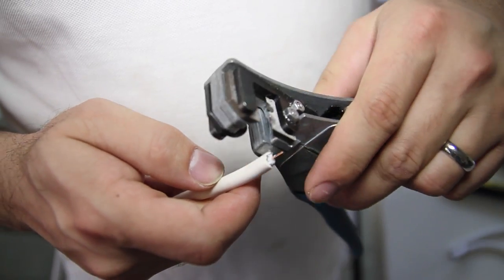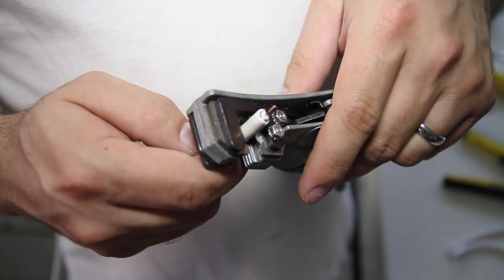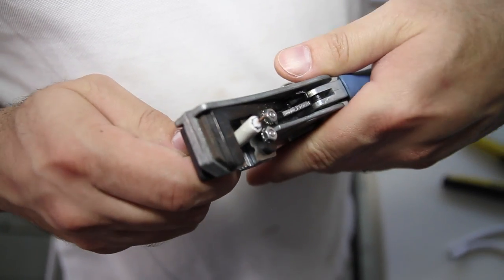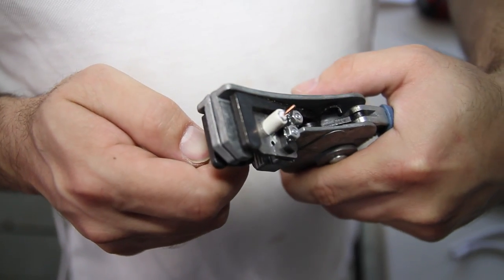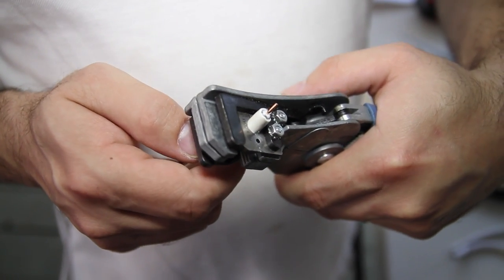Now we'll repeat this process exposing the outer conductors. Again only taking off about a quarter of an inch of wire.